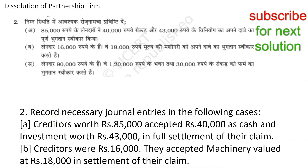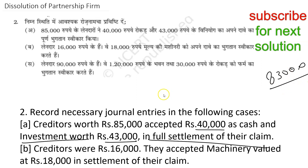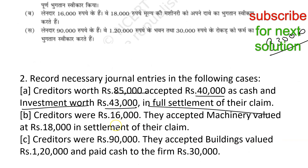Hope the journal entries were clear. Now let's read question number two — again we only need to make journal entries. Part A: creditors worth Rs. 85,000 accepted Rs. 40,000 as cash and investments worth Rs. 43,000 in full settlement of their claim. So your creditors are Rs. 85,000, they accept Rs. 40,000 cash plus Rs. 43,000 in investments — totaling Rs. 83,000 — in full settlement.